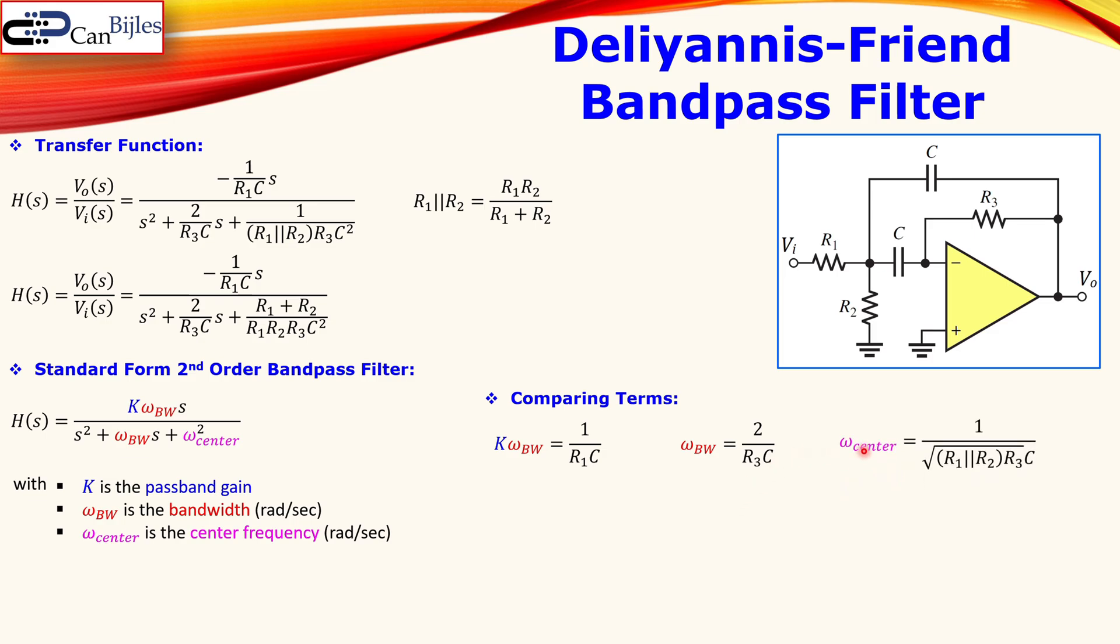The center frequency is then just looking at this expression and that is then here omega center squared. So that means the omega center itself is the square root of this expression. And now you see here indeed that this is the square root of the expression there. Now we have our comparison terms of the transfer function for the circuit and the standard form of the second order bandpass filter.